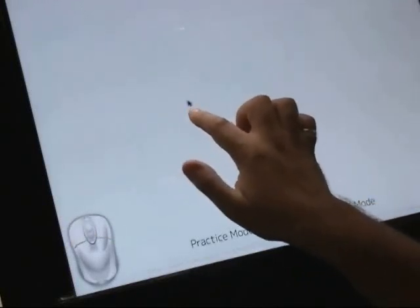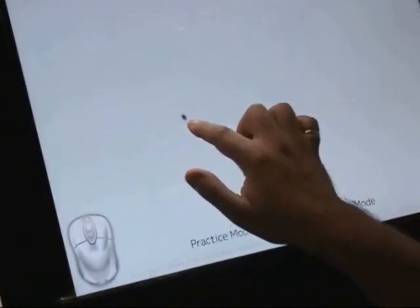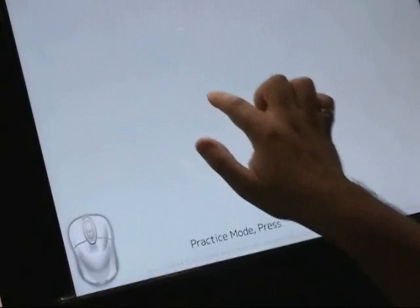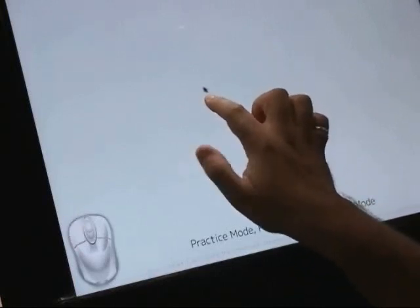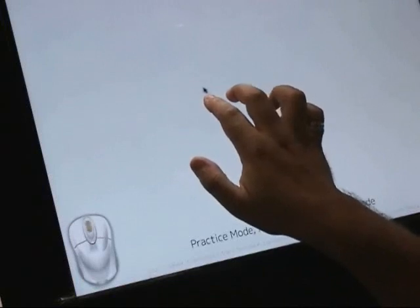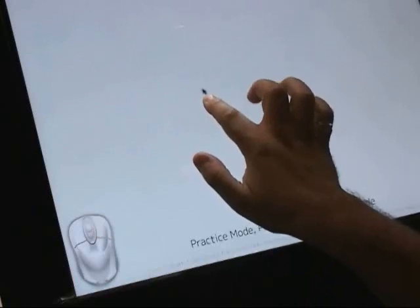The index finger is used for tracking. Pressing to the left of the index finger activates the left mouse button. Pressing to the near right activates the middle button, and pressing to the far right activates the right button.